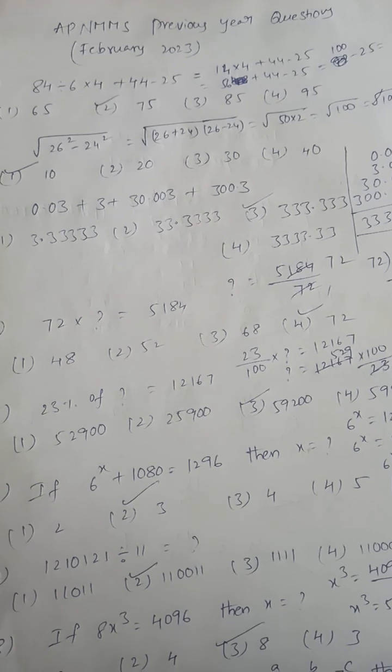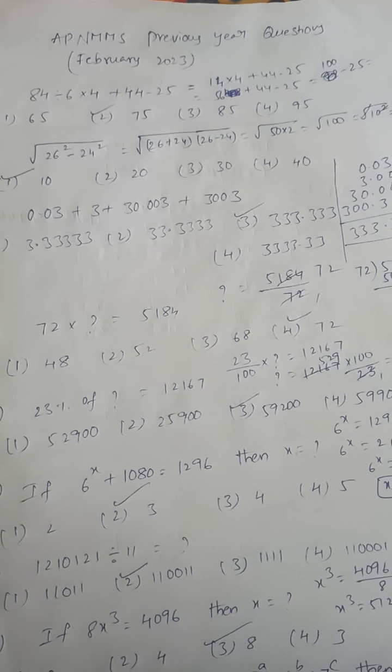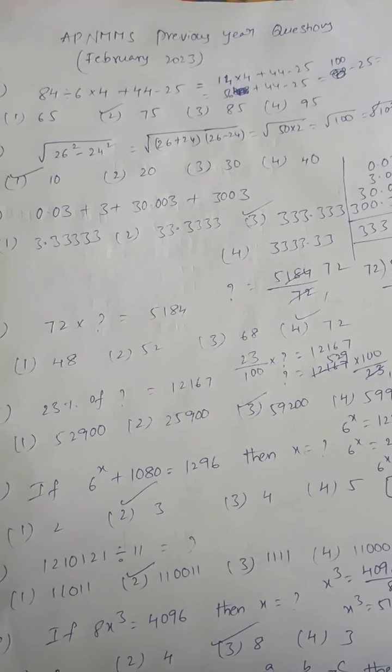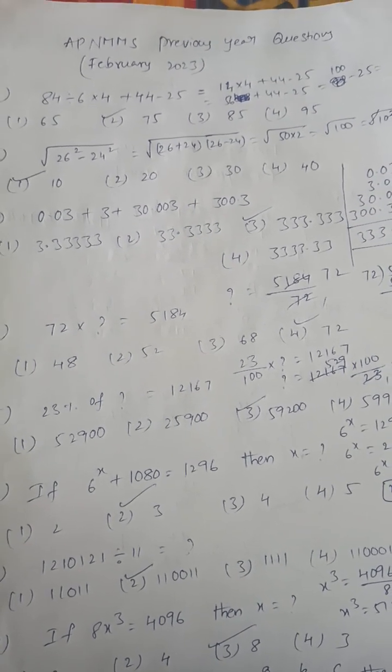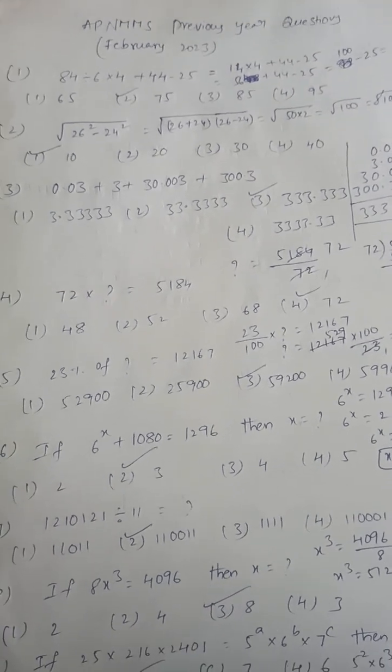First question: 84 divided by 6 into 4 plus 44 minus 25. So 84 divided by 6 is 14, then 14 into 4 is 56 plus 44 minus 25.